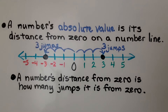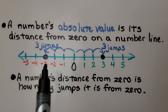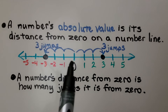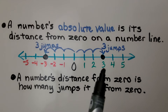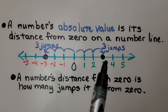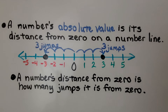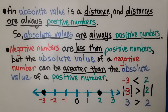As we saw in the last lesson, a number's absolute value is its distance from 0 on a number line. A number's distance from 0 is how many jumps it is from 0. So the absolute value of negative 3 is 3, because it's 3 jumps from 0, and the absolute value of positive 3 is also 3, because it's 3 jumps from 0. An absolute value is a distance, and distances are always positive numbers, so absolute values are always positive numbers.